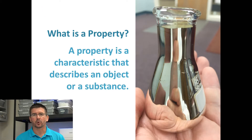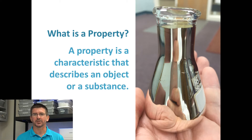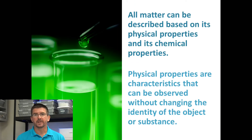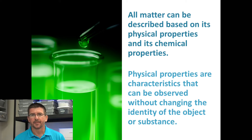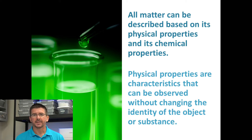When we talk about a property, essentially we're just describing a characteristic that an object or a substance has. It's just another name for a characteristic, a quality, an attribute. There are lots of different characteristics or properties that we can use to describe objects and substances, but they all fall in one of two categories: physical properties and chemical properties.